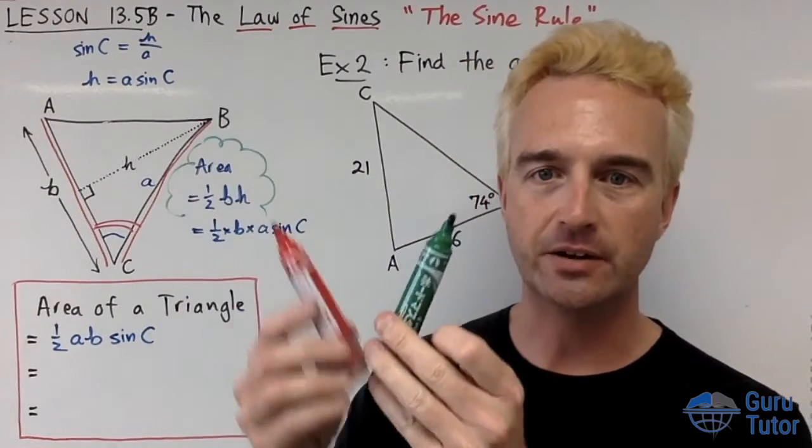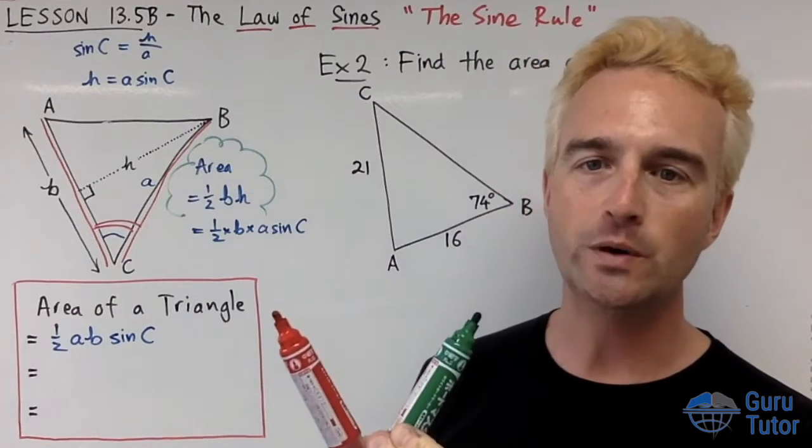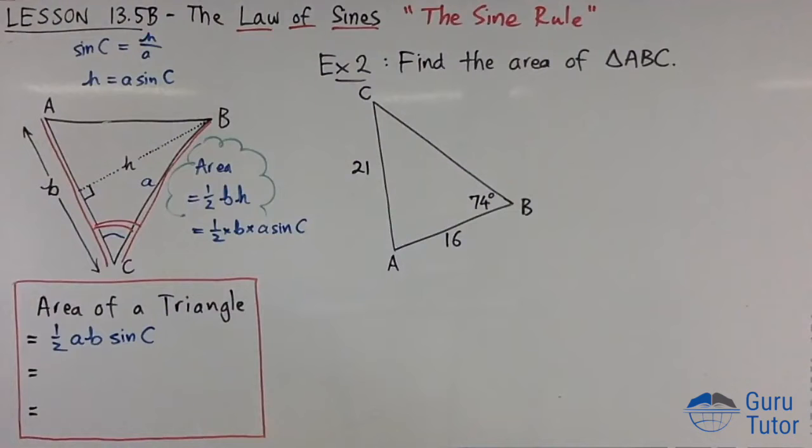If you want to find the area of a triangle, it's always a half times one of the side lengths times another side length times the sine of the angle between them. It's always going to be that included angle. There are two other versions of this.